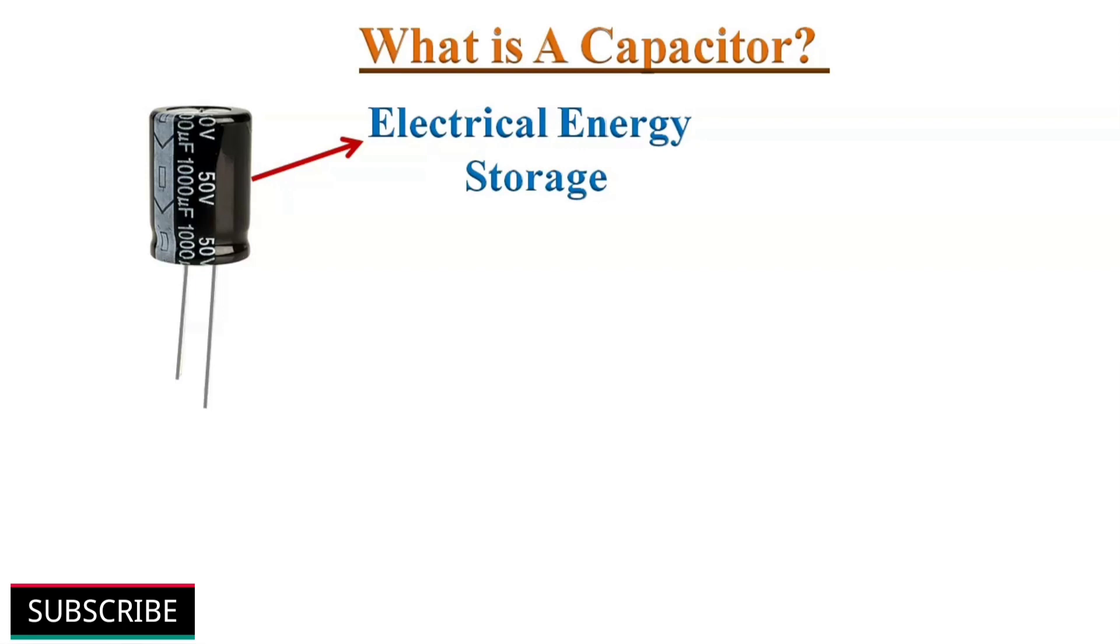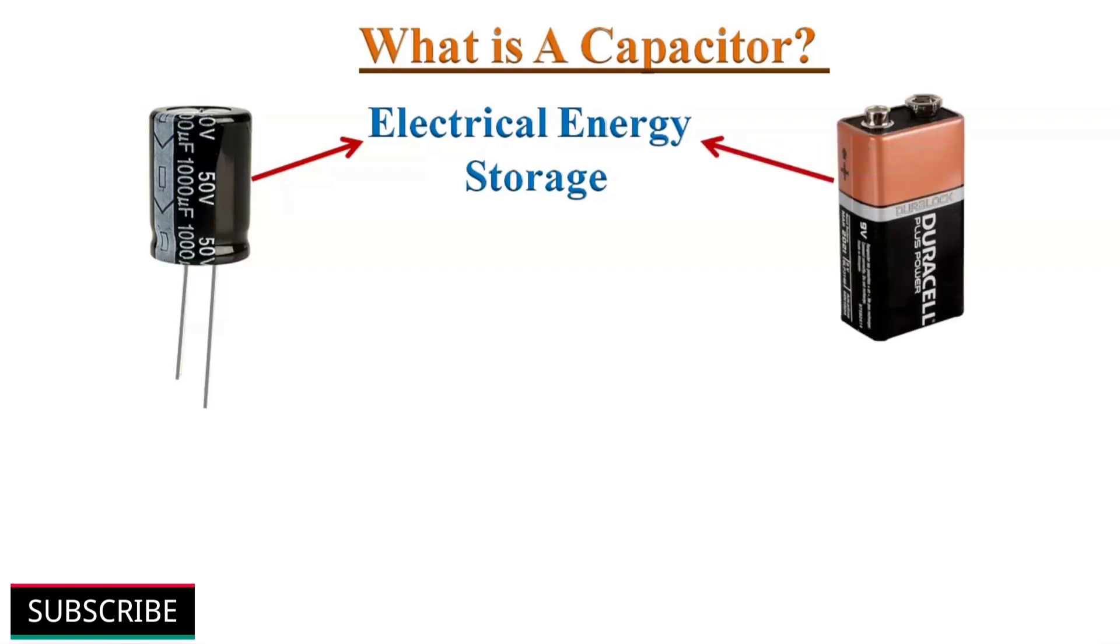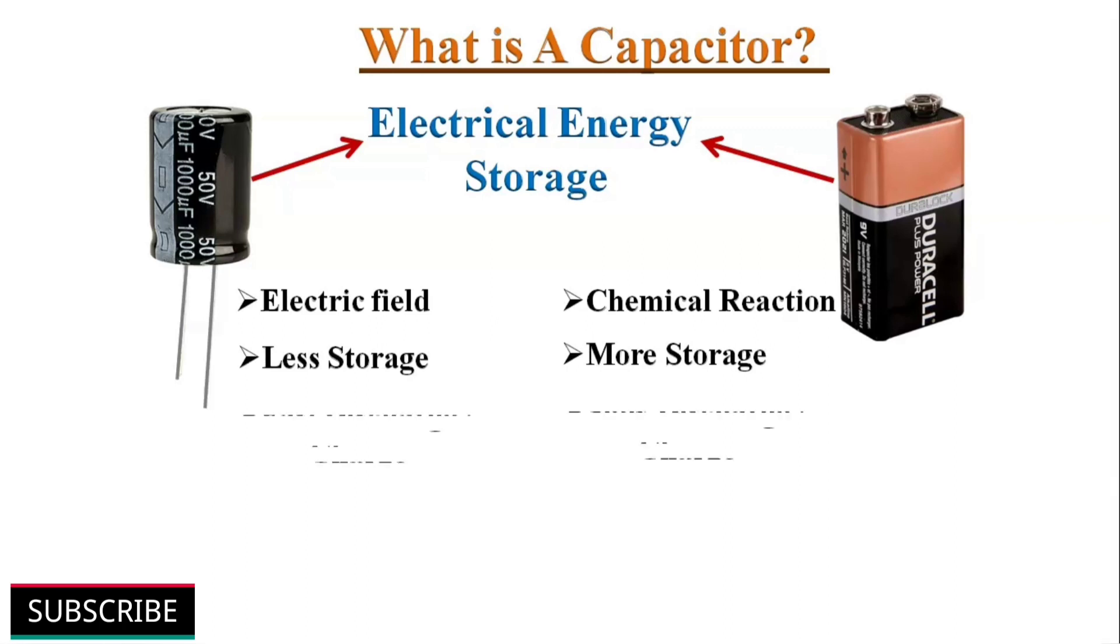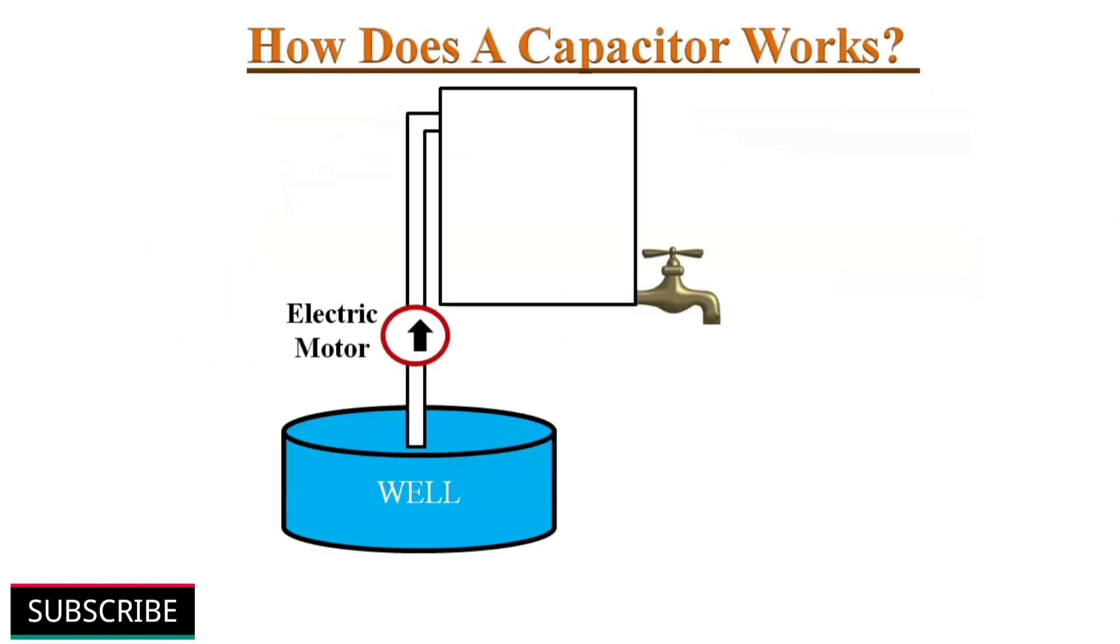Capacitors store electrical energy just like a battery, but they work in completely different ways. Inside a battery, chemical reactions produce electrons. A capacitor can't produce new electrons. It stores electrical energy in an electrostatic field. Capacitors store less energy compared to the battery and can charge and discharge much faster than battery.